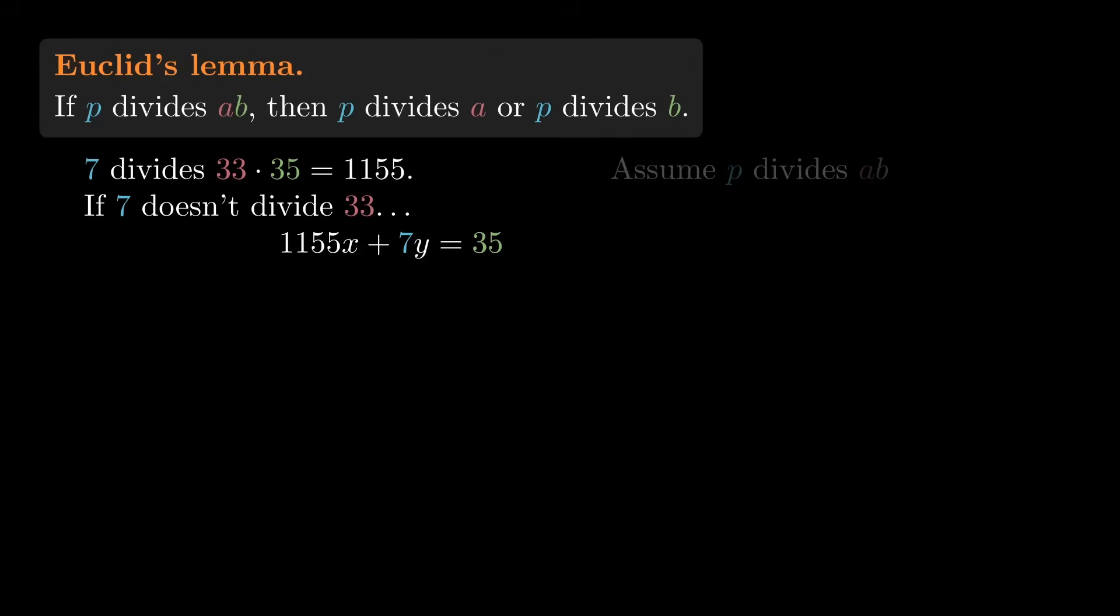then this will imply that 35 is also a multiple of 7. In other words, that 7 divides 35. What are x and y? Here's one pair of values that works. x equals 3 and y equals negative 490.